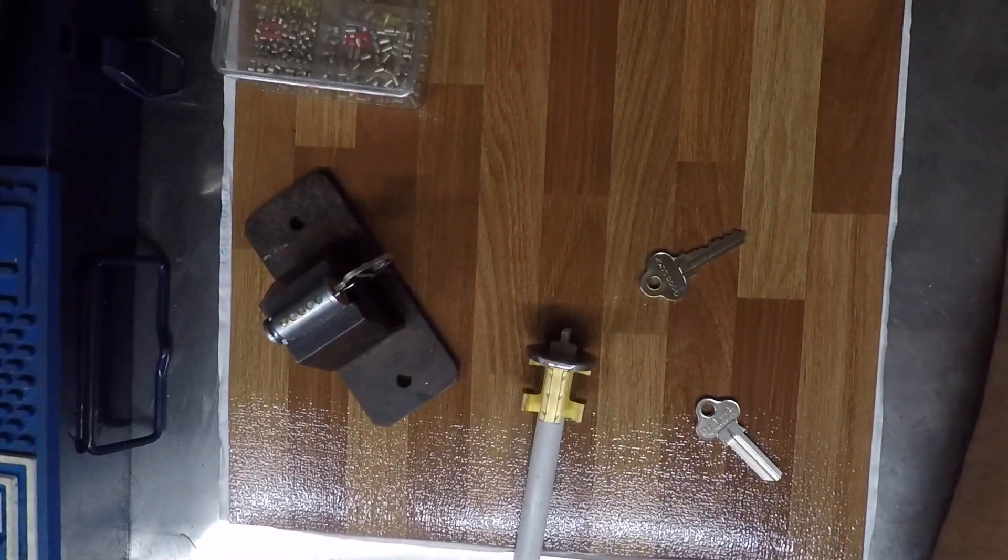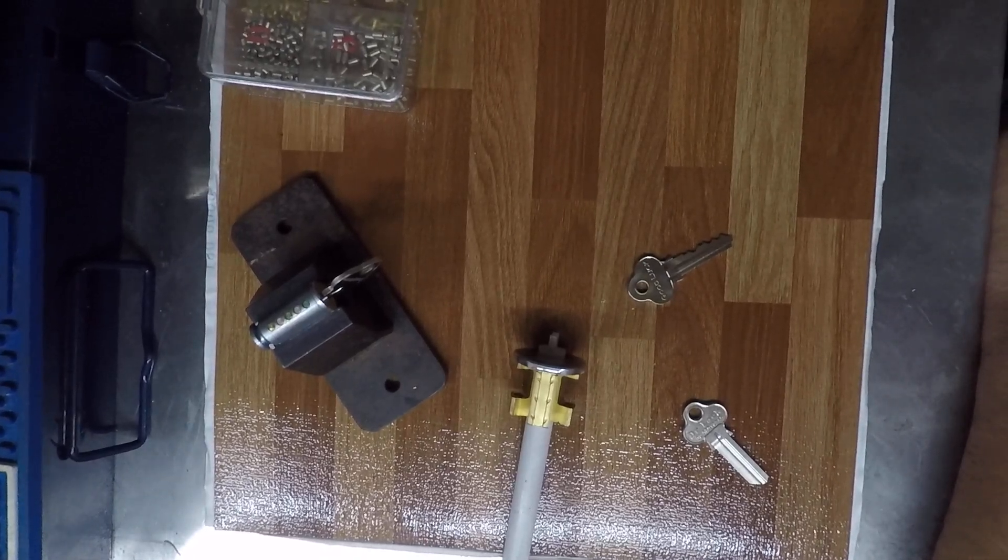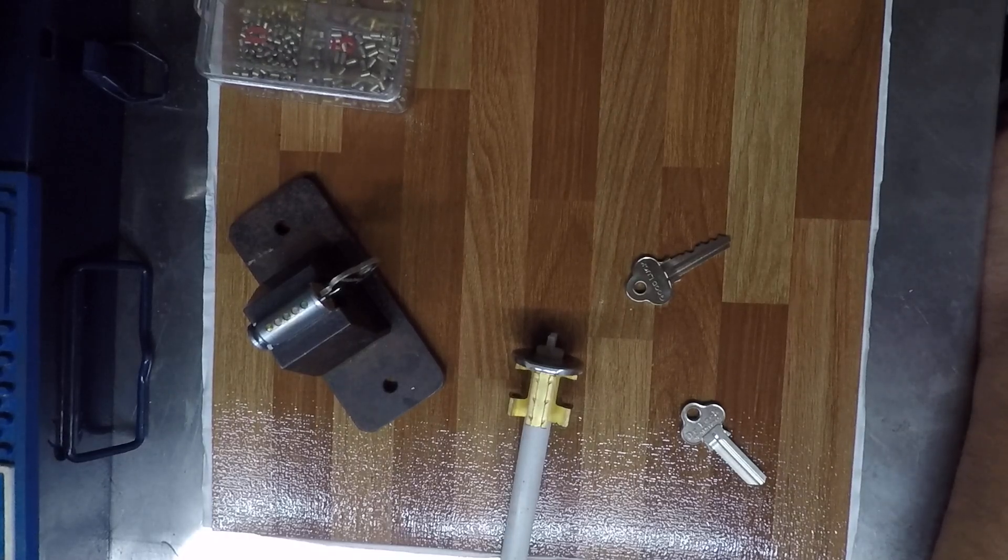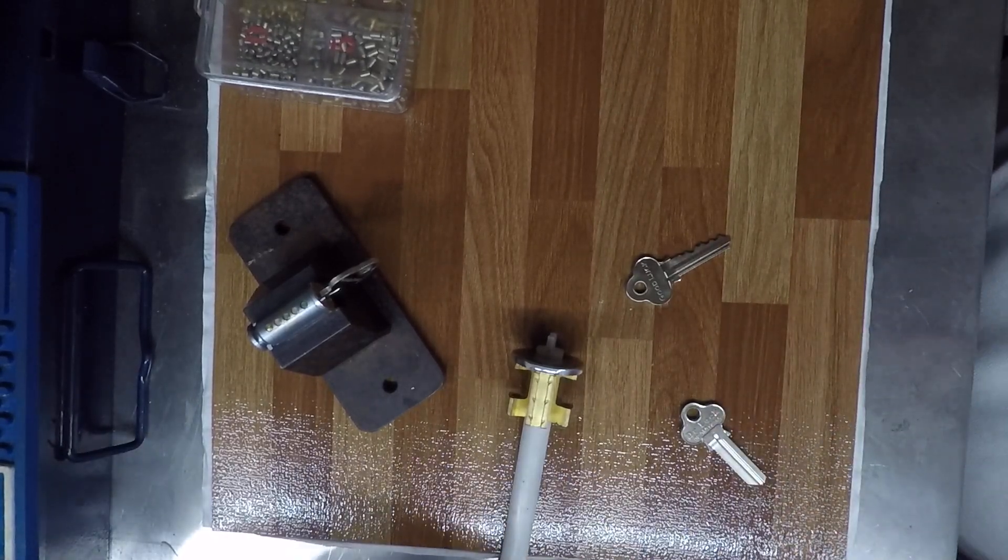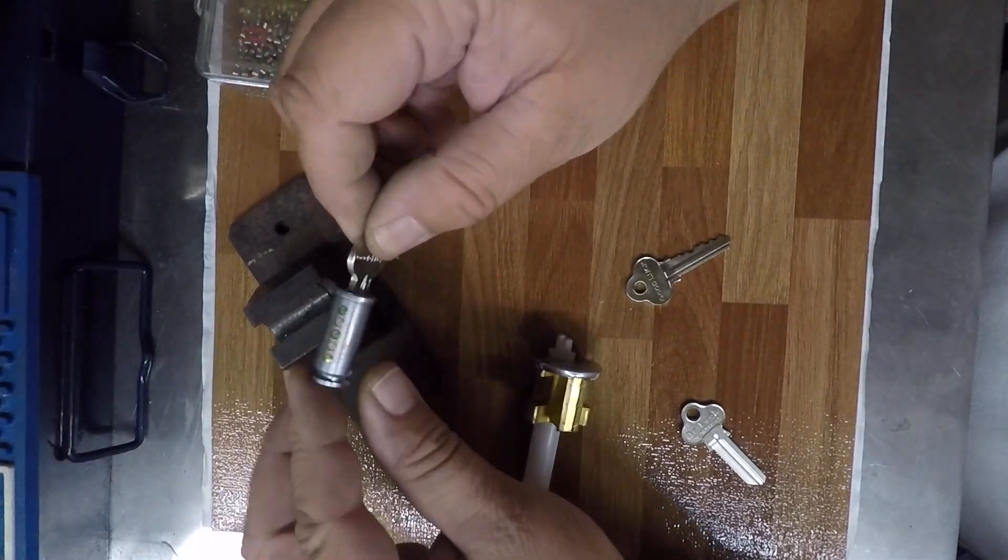Welcome to another video from Dr. Lock. In this video we're going to show you how to make a jam key. Basically, the key can go into the lock and it's going to jam and stay in the lock. It can be removed but only with great difficulty and can't be removed from the front. So this is how to create a jam key.